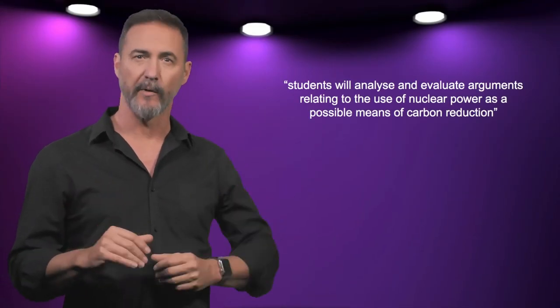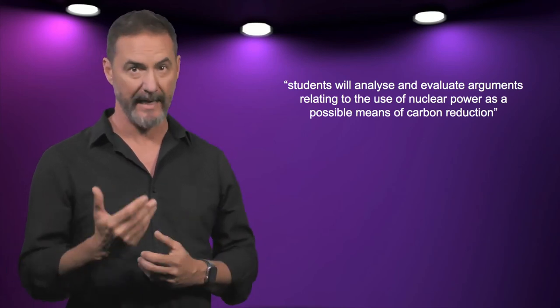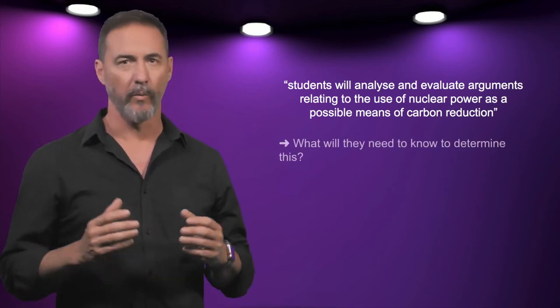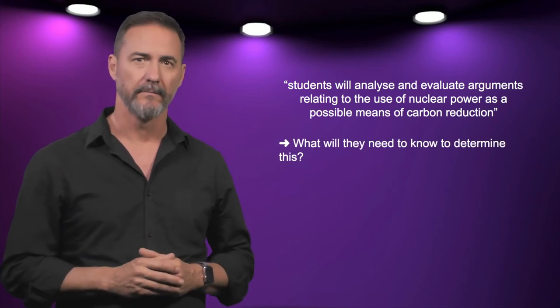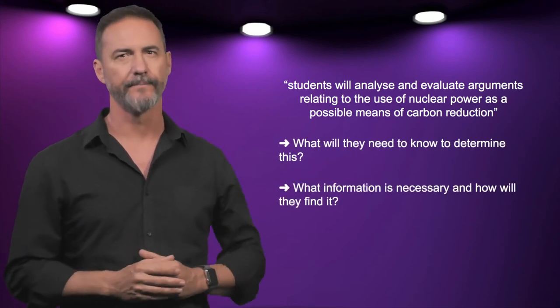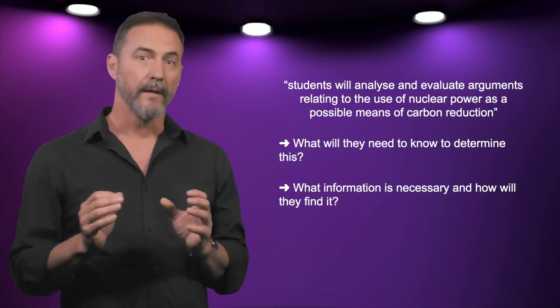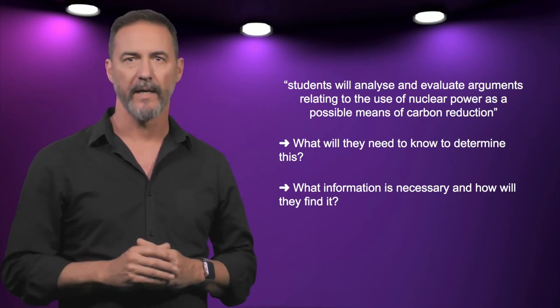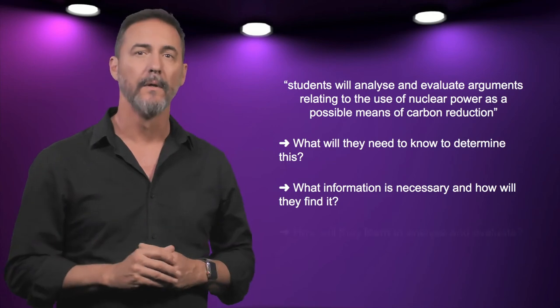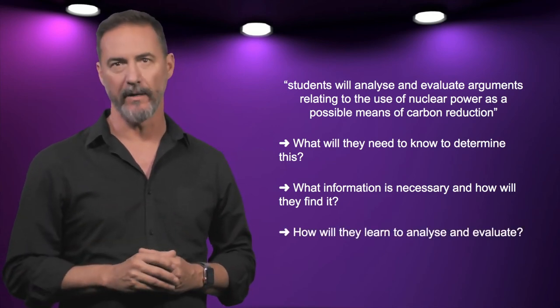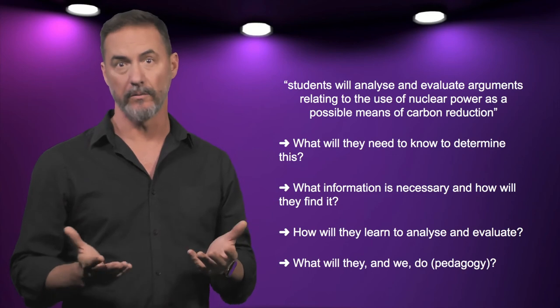Writing cognitions in contexts gives us two directions: one is curriculum direction and the other is pedagogical direction. For the task — students will analyse and evaluate arguments relating to the use of nuclear power as a possible means of carbon reduction — we can ask what will they need to know to determine this? What information is necessary and how will they find it? This tells us what curriculum material we will need. Given they need to analyse and evaluate arguments, we can ask not just what arguments — curriculum — but how will they learn to analyse and evaluate? What will they and we do? Pedagogy.